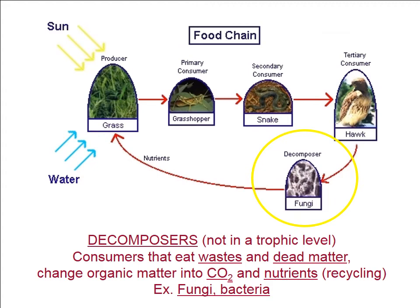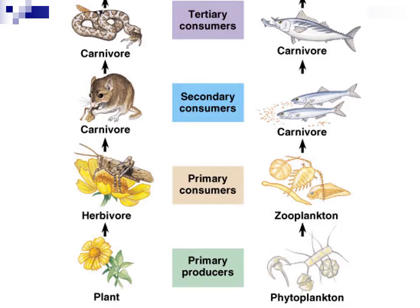Decomposers are not a trophic level at all — they are consumers that eat waste and dead matter and change organic matter back into carbon dioxide and nutrients, basically doing nutrient recycling. This is fungi and bacteria. They recycle everything and when organisms die, they bring those materials back into the environment.